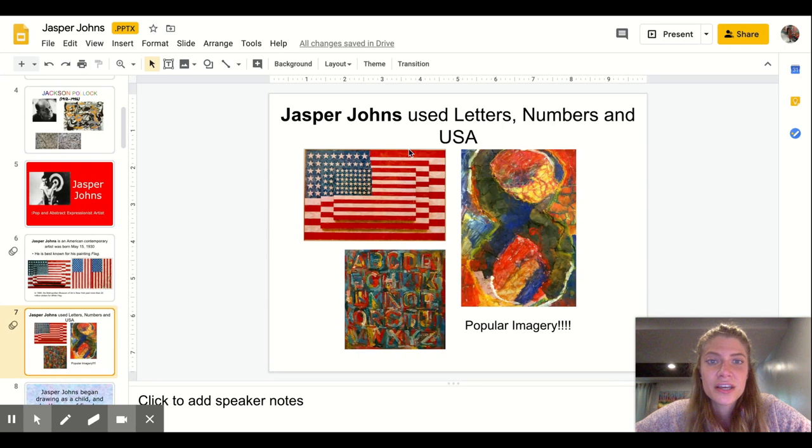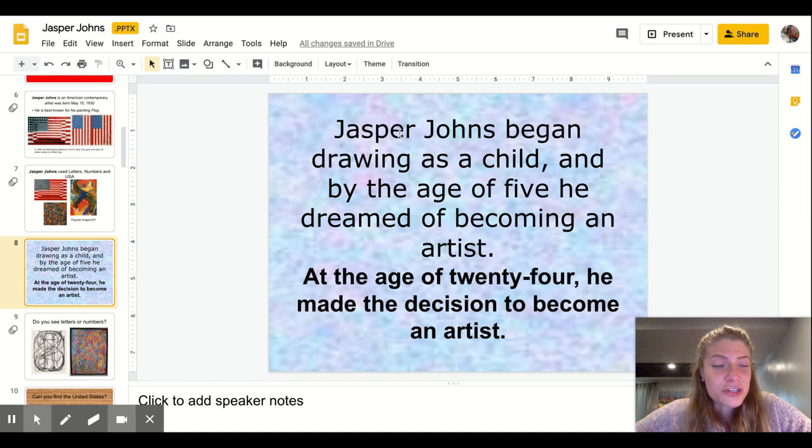Here's the flag. Here's a hidden number eight if you can see the eight. And then here is the alphabet just painted in really beautiful and kind of messy brush strokes. That was his abstract expressionist theme coming out. He was very interested in art as a child but then by the age of 24 he made the decision to become a real artist.